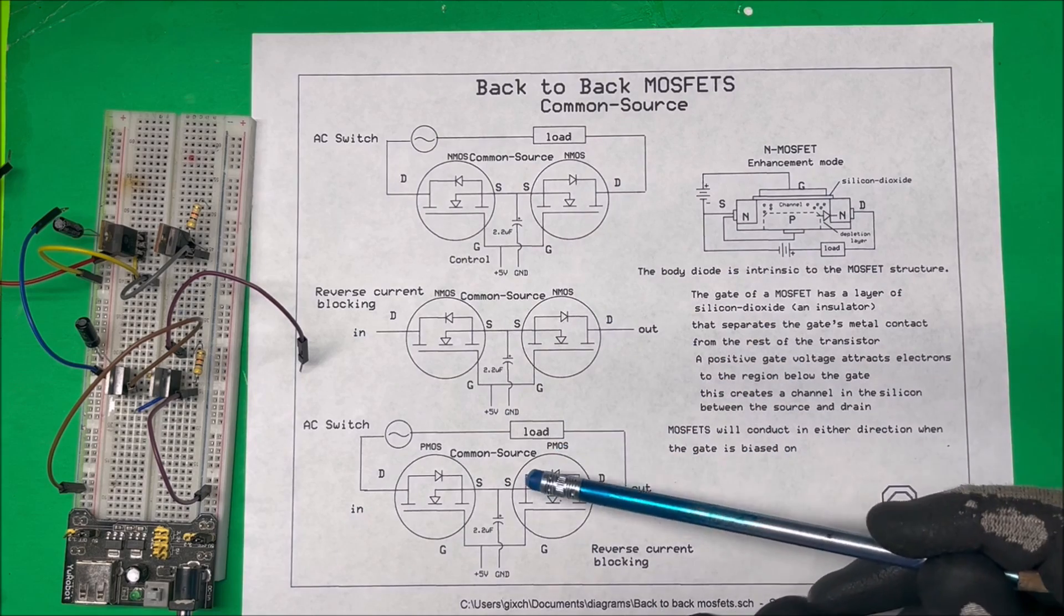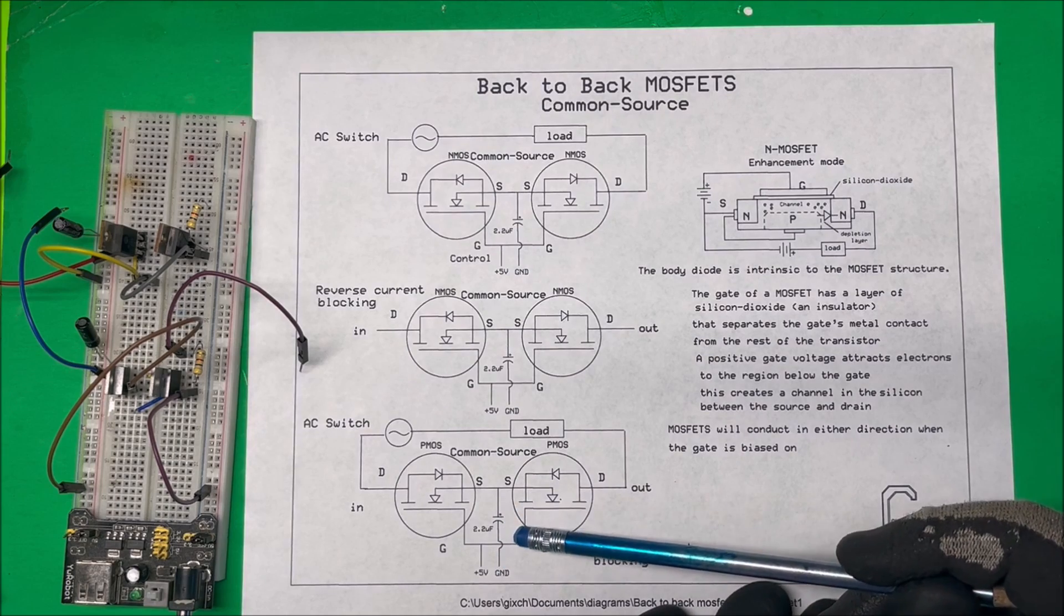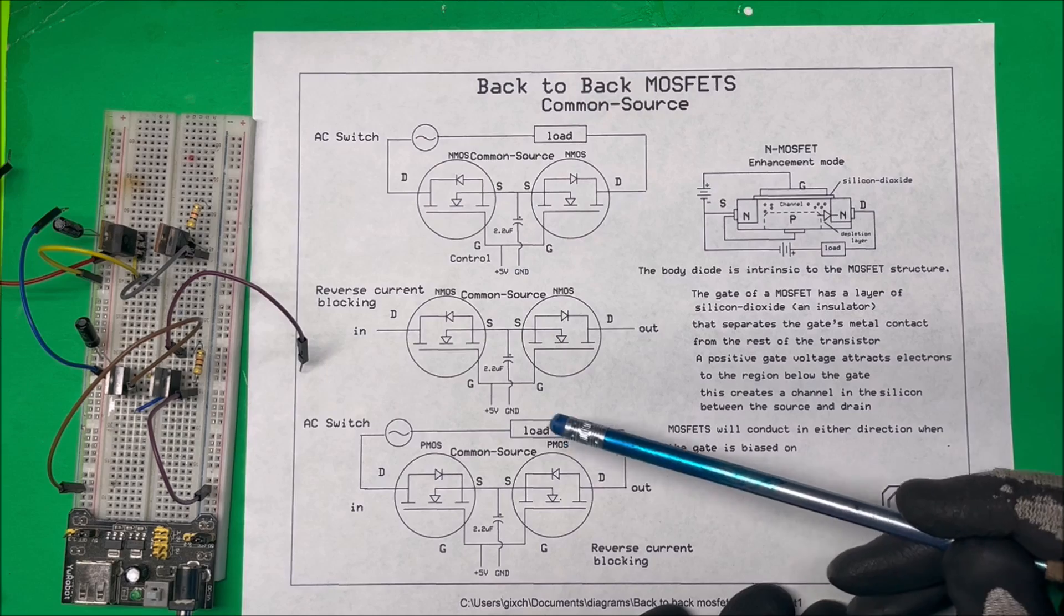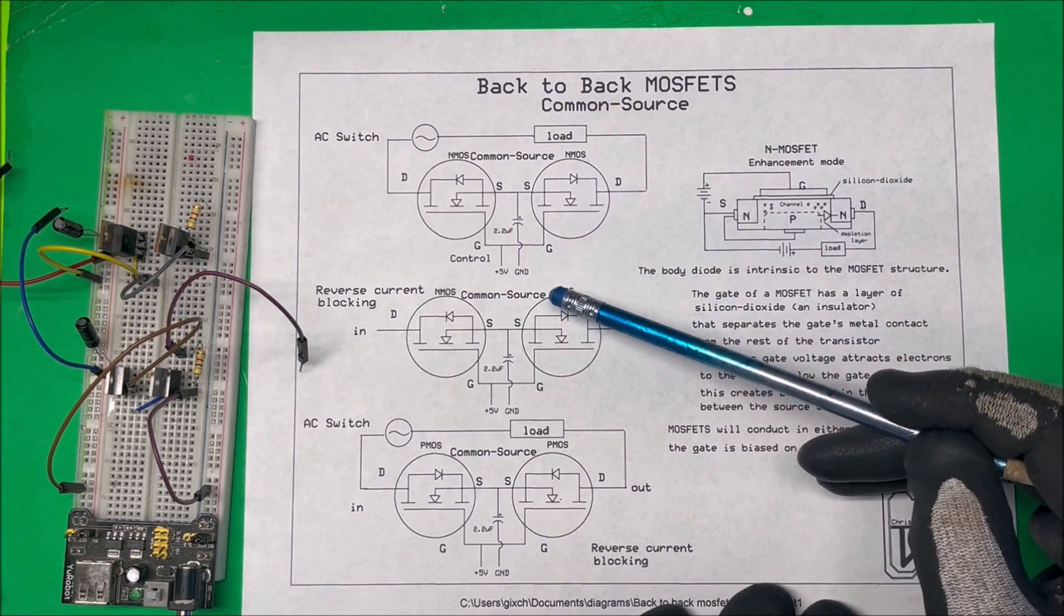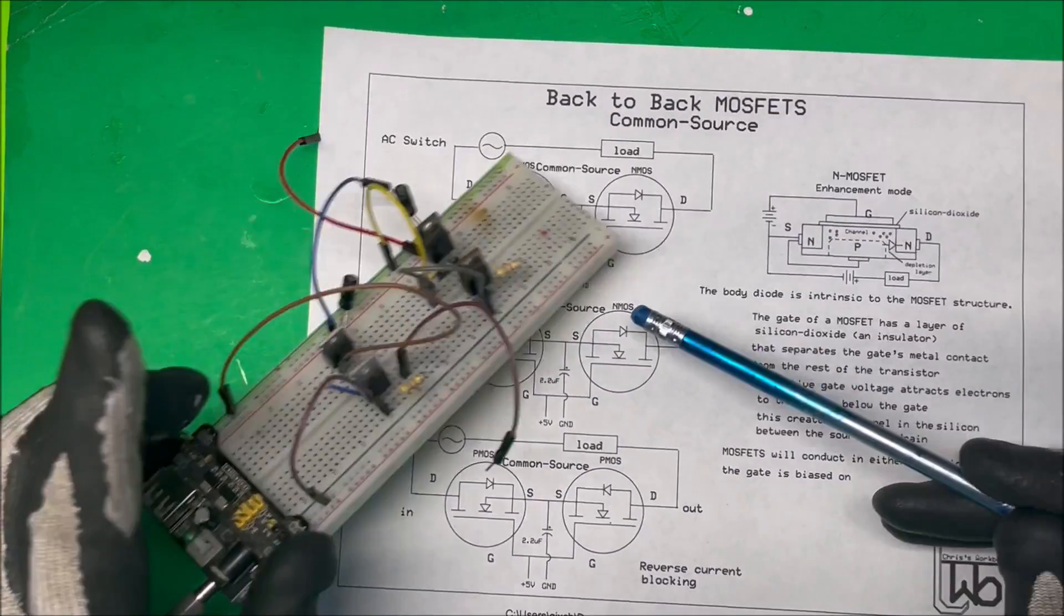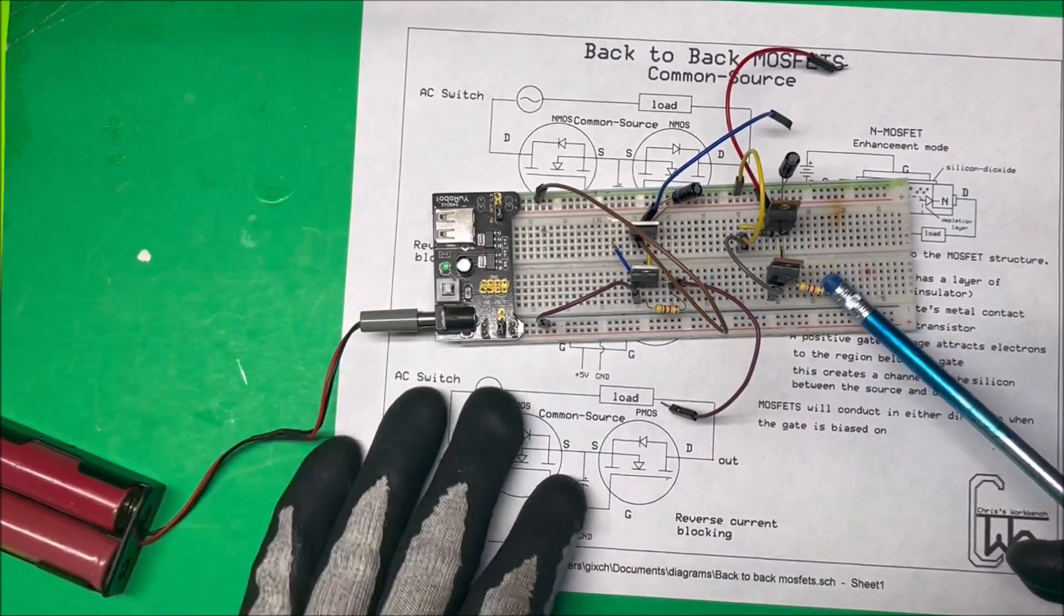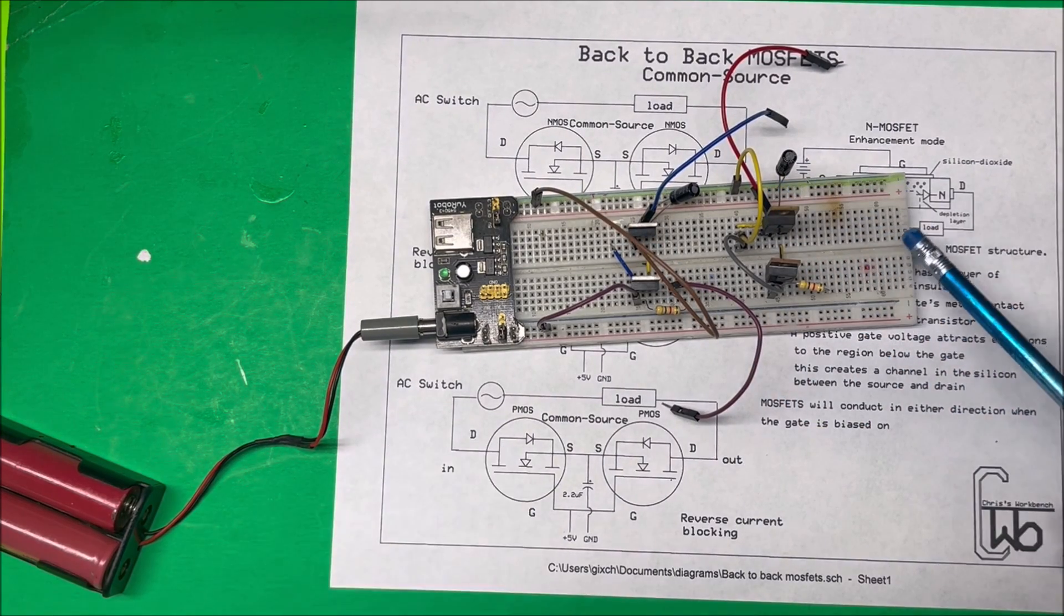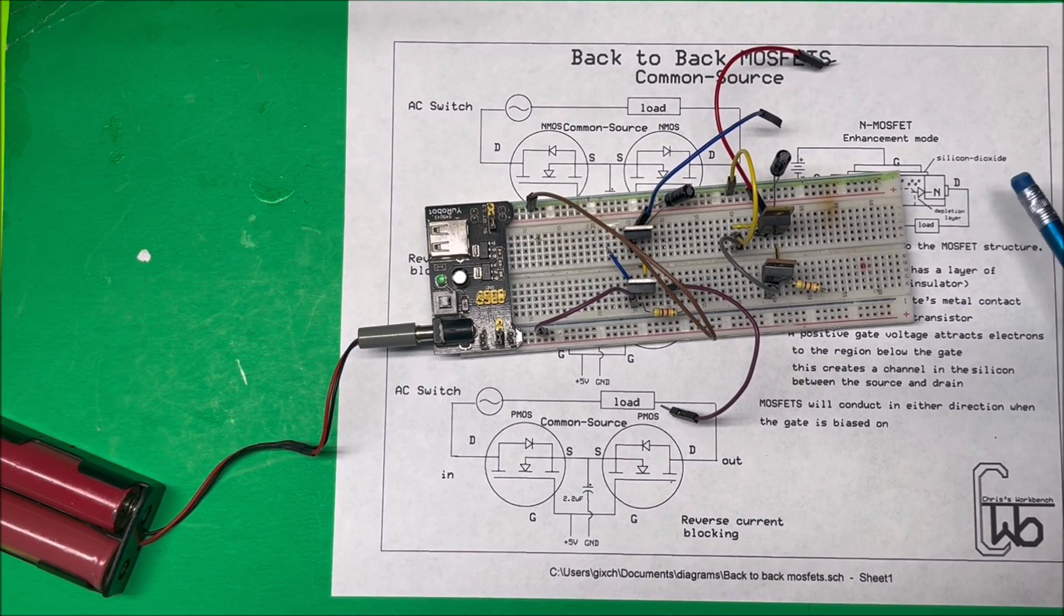This is a p-channel MOSFET and it's the same thing - I'm putting a capacitor in there to turn it on. Now I'm going to take it over to the oscilloscope and put AC through it. I'll show you this sine wave, then turn one off and then turn the other one off to show you what happens. This is the unit here - this happens to be the p-channel and this is the n-channel MOSFET. Let's take it to the scope and see what happens.